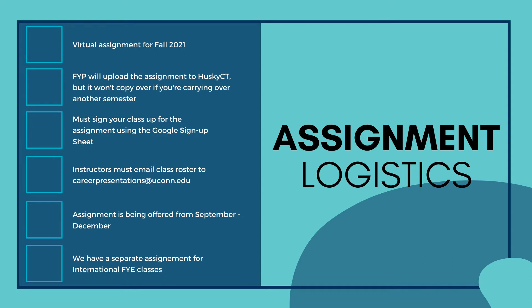You will be able to sign up for the assignment starting in June. First-year programs will send out an email to all of you with a sign-up sheet. Once you sign up you will need to send us your class roster. We use the class roster to tag students in Handshake to give them proper access to the appointment type when they're scheduling their resume critique. We have extended the time frame of the assignment this year since we have 2,000 students scheduling appointments with us for this assignment alone. The assignment is starting earlier — in September — and it will end the first week of December.